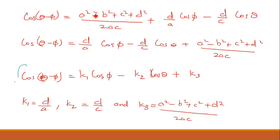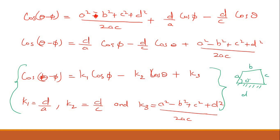This is the Freudenstein equation. You have to draw the 4-bar mechanism showing all the link lengths as A, B, C and D, with theta as the input angle and phi as the output angle. Combining these two equations along with the figure gives the Freudenstein equation.